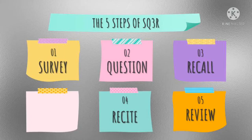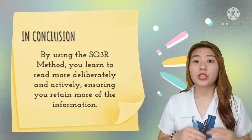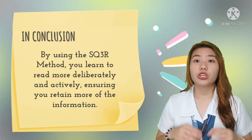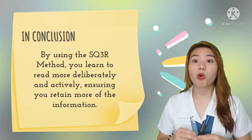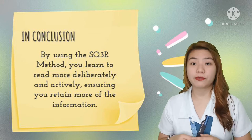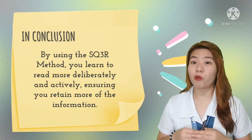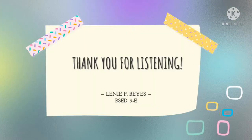After following these five steps, you will have actively read a text, and you will be better at remembering and explaining what the text is all about. In conclusion, by using the SQ3R method, you learn to read more deliberately and actively, ensuring you retain more of the information. Thank you.